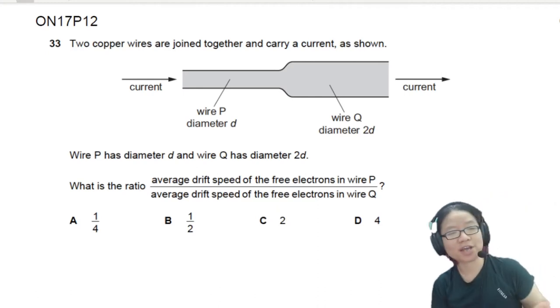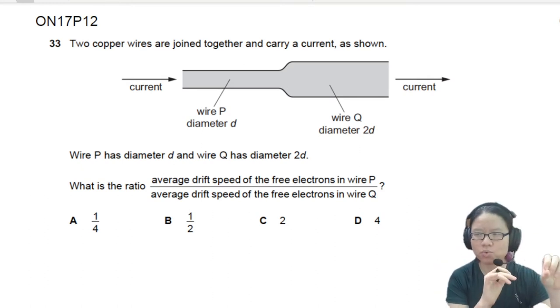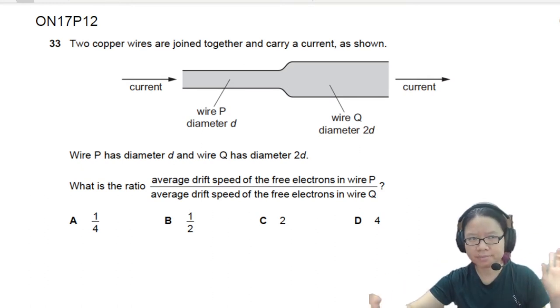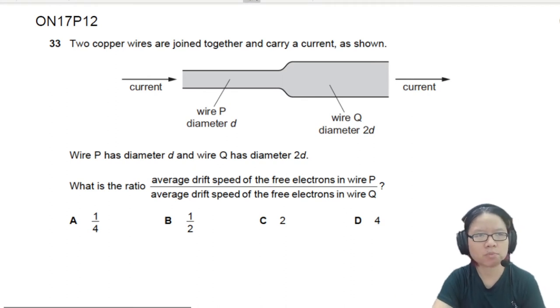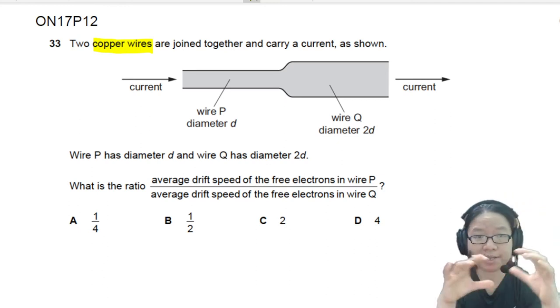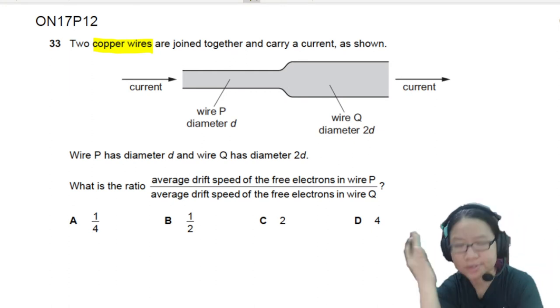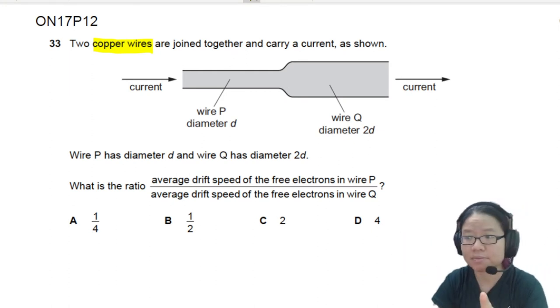In this video, we are going to look at the ratio of drift speed of electrons in two sections of wires. One is narrow and then the other one is thicker. So you can see here we have two copper wires joined together and carry a current as shown. When you have current flowing inside a wire that is not uniform, when I say not uniform, I mean the area is not the same, it's still the same current though.